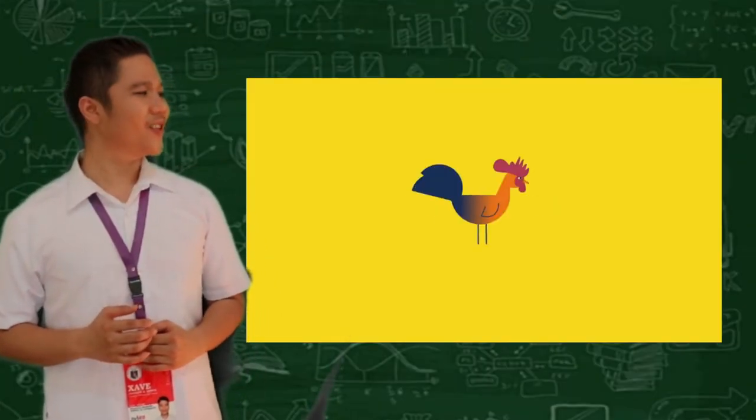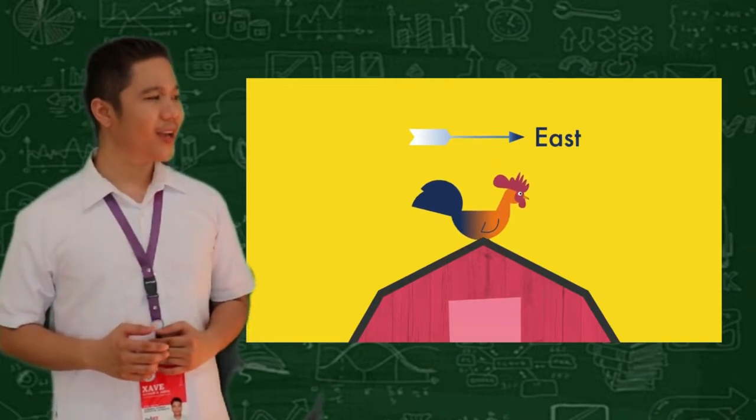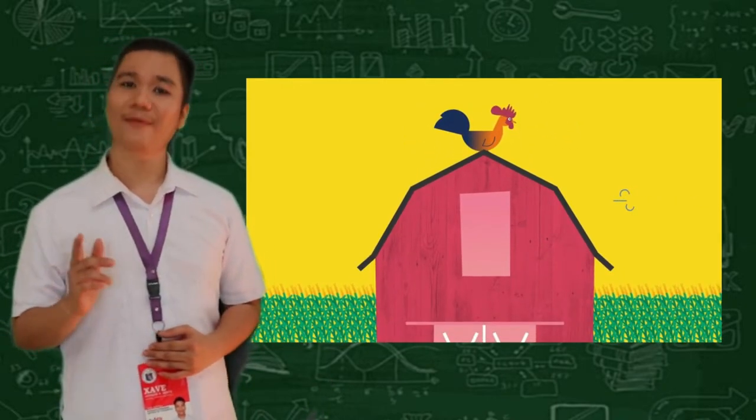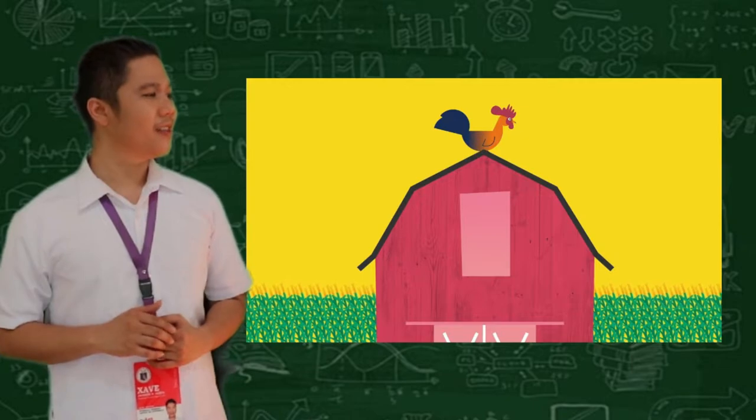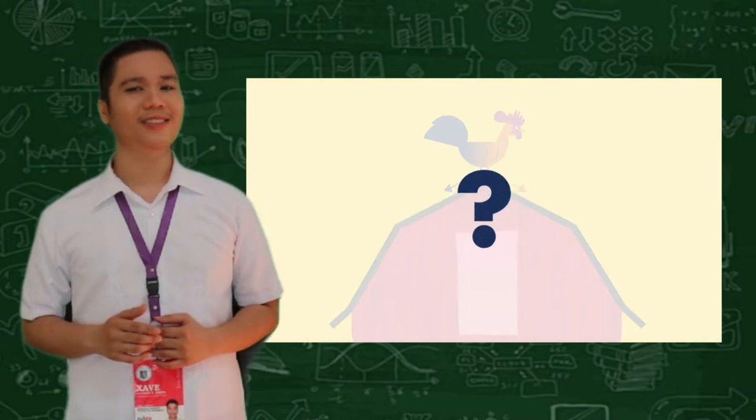A rooster is on the roof of a barn facing east. The wind is blowing west at 10 miles per hour. The rooster lays an egg. Now, which direction does the egg roll?